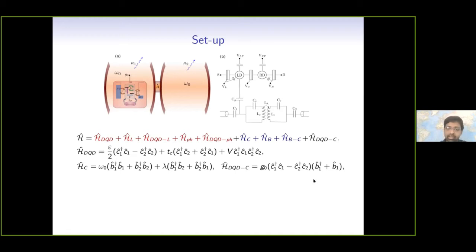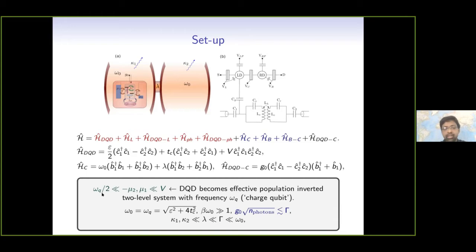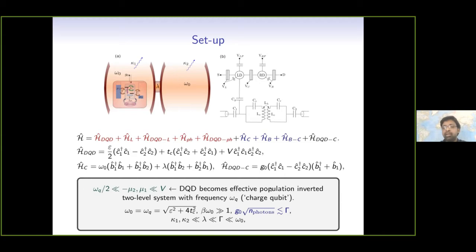The coupling between the double quantum dot and the cavities is of a known form from these experiments. In this regime, the double quantum dot behaves like a population-inverted qubit with a frequency omega_q. Since epsilon and Tc are very widely tunable, we take it to be resonant with the cavities at quite low temperature. There is one more very important point: the average number of photons N in the two cavities cannot be too large, because this coupling is actually non-linear but we are going to use a linearized theory, and we need this approximation to hold.